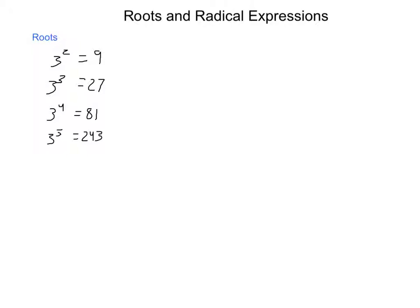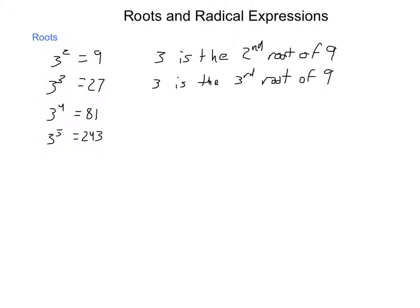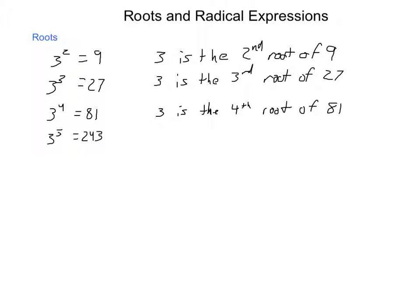We could say that 3 is the second root of 9. Similarly, 3 is the third root of 27, 3 is the fourth root of 81, and 3 is the fifth root of 243. So the roots simply tell us a way of undoing the exponents, and they're of matching sets.